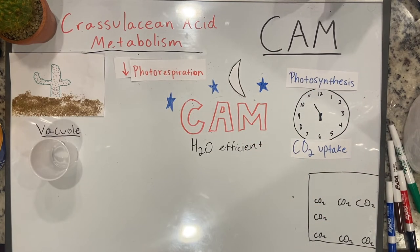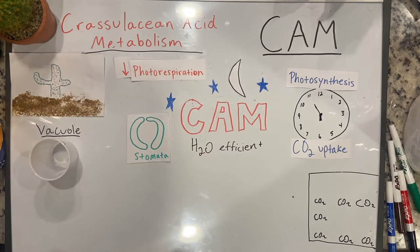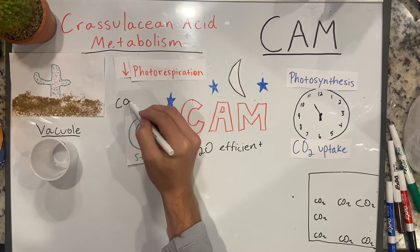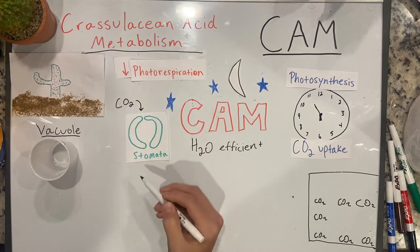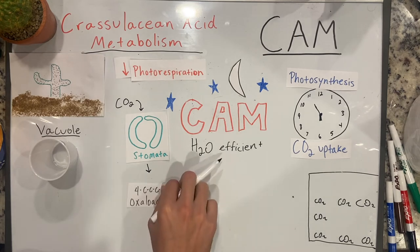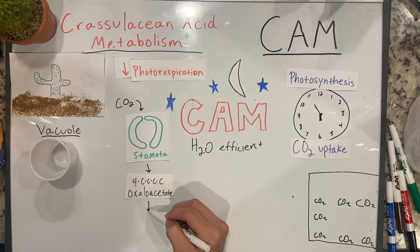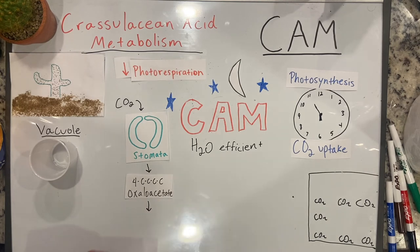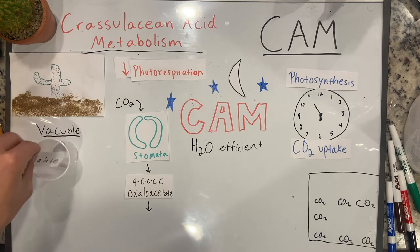During nighttime, CAM plants leave their stomata open. This process allows carbon dioxide through into the leaves. As CO2 enters, it is made into oxaloacetate by PEP carboxylase. After that, it is made into malate or another organic compound. This is then held inside of the vacuoles by the plant until daytime the next day.